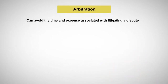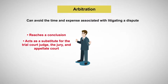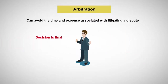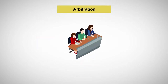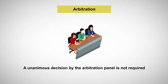Arbitration can avoid the time and expense associated with litigating a dispute. Instead, one person or a panel reaches the conclusion in the case. The arbitrator acts as a substitute for the trial court judge, the jury, and even the appellate court. The arbitrator's decision is final and it is unlikely to be reversed or modified on appeal. Sometimes a three-arbitrator panel judges a case. One popular method of appointment is having each party select one of the arbitrators, who then select the third. Unless there is an agreement to the contrary, a unanimous decision by the arbitration panel is not required — a majority vote is sufficient.